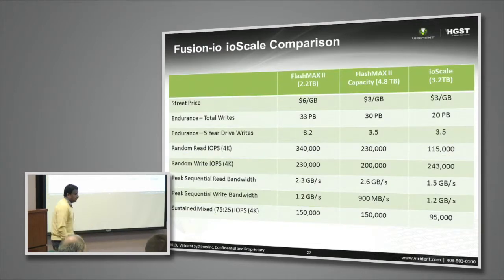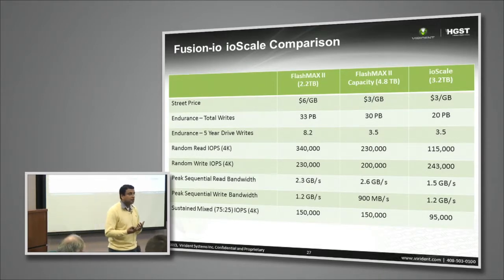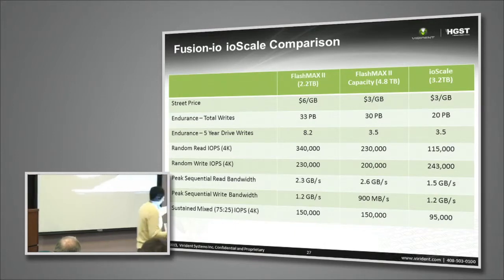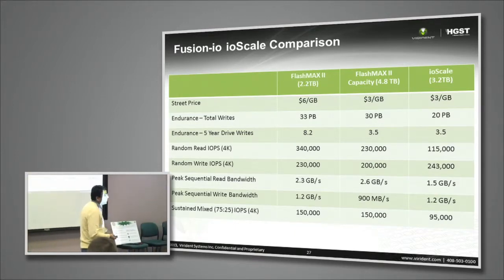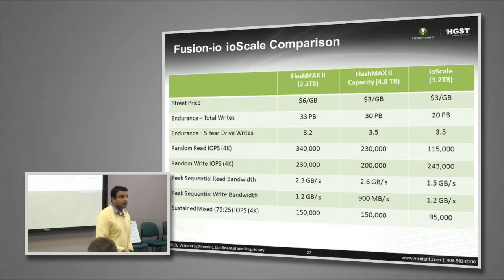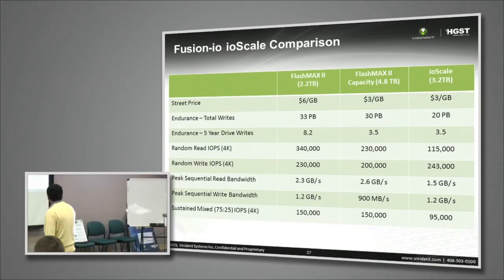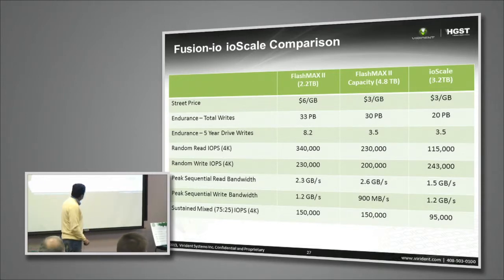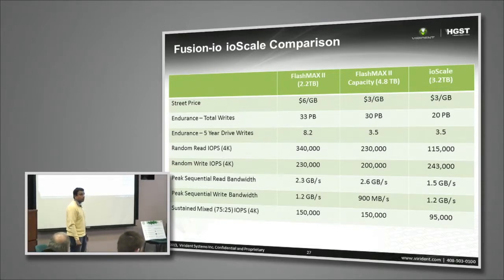Here's the competition. The question is how do we perform in the industry? We present a comparison with the Fusion IO 3.2 TB device versus our 4.8 TB device. I would not hesitate to say our 4.8 TB device has 'diffused the gas' of the Fusion IO 3.2 TB device. Look at the performance — we are almost two times higher than the 3.2 TB device.